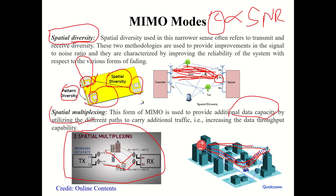To summarize: spatial diversity enhances SNR, which indirectly enhances capacity. Spatial multiplexing enhances throughput directly by sending multiple data streams simultaneously.